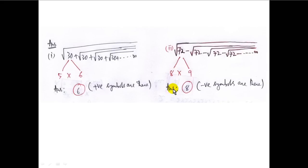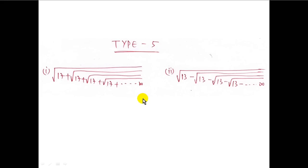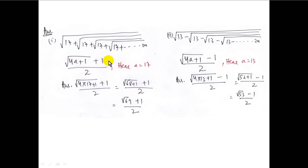In the next variation, if the given number is not the product of any two consecutive numbers, we use the formula: root over of (4a plus 1), plus 1, upon 2, when positive symbols are there. For example, root over of 17 plus root over of 17 up to infinity — here a equals 17, so the answer is root over of (4 into 17 plus 1) plus 1 upon 2, which gives root over 69 plus 1 upon 2.